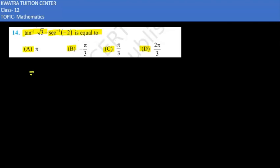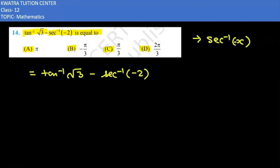Here first of all, we will write our given equation which is tan inverse square root 3 minus sec inverse minus 2. Here we will use our formula for sec inverse x when it has a negative sign, we can write it as pi minus sec inverse x.